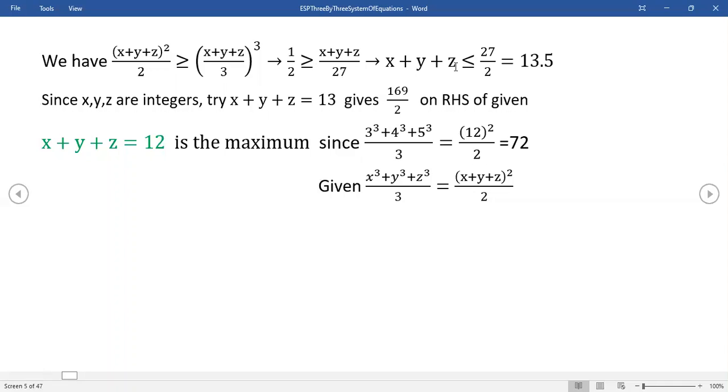Again, z had to be an integer, so we reject even attempting 13.5. The next lowest integer would give you 13, but notice I rewrote the given for you - if you substitute 13 in here you get 169/2, which is not an integer. So we can't work with that.